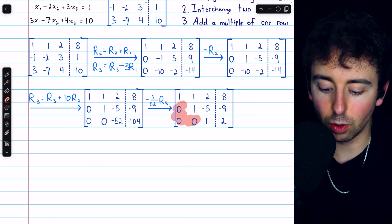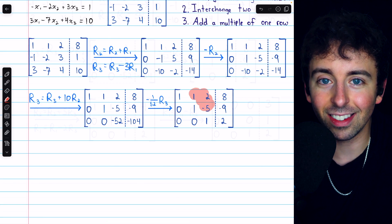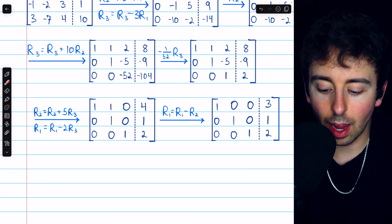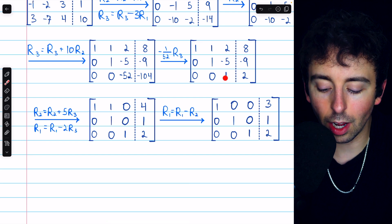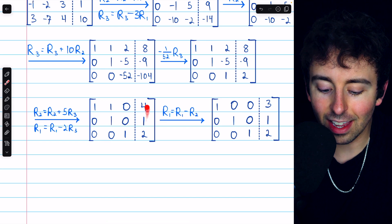The last thing we have to do is get 0s above them, and then we will have solved the system. So to get 0s above this 1, we will add 5 times row 3 to row 2, and subtract 2 times row 3 from row 1. And that gets us here.